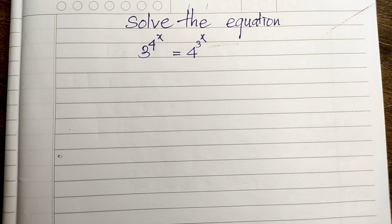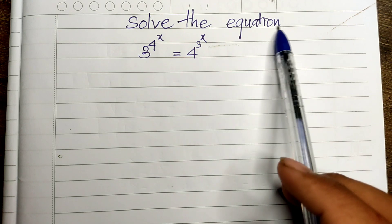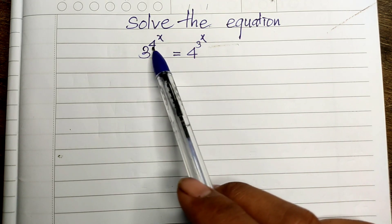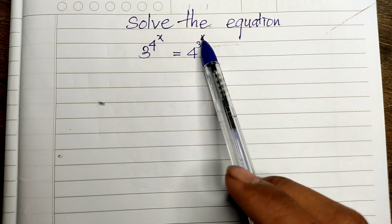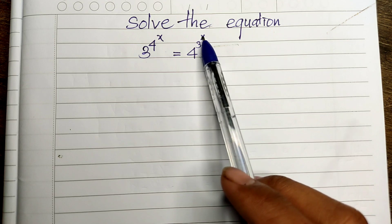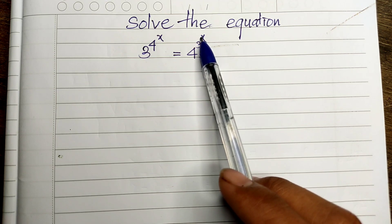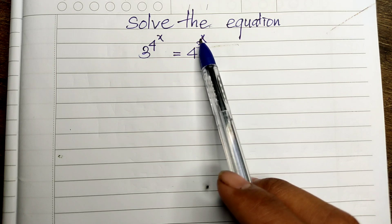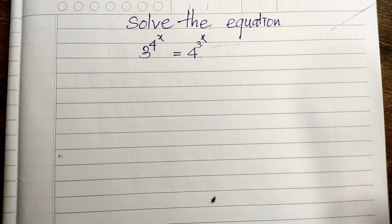Hello everyone, welcome to my YouTube channel. Today I have one exercise on paper. The equation that we have is: 3 to the power 4 to the power 8, equals 4 to the power 3 to the power 8. Do you know how to show this? If you know it, please try it first, then come back to watch my video to verify your solution. And before we go to the solution, please don't forget to subscribe to my channel for more exciting videos. Okay, let's go to the solution together.